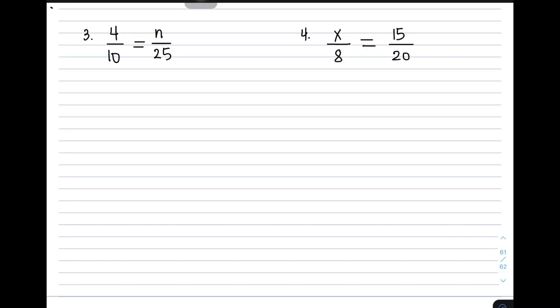Now, let us continue answering item number 3. We have 4 over 10 is equal to n over 25. So simply, you can use cross-multiplication, you can cross-multiply,